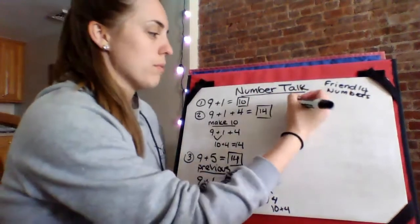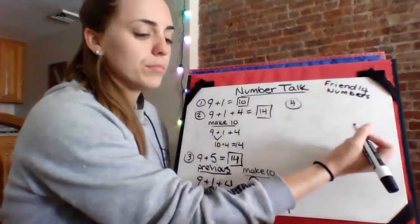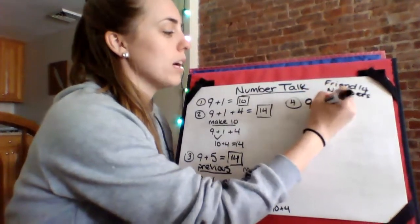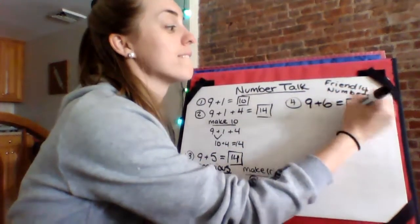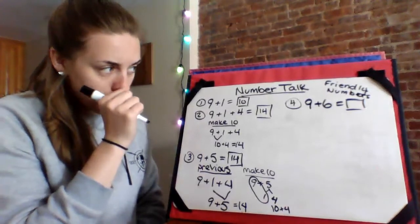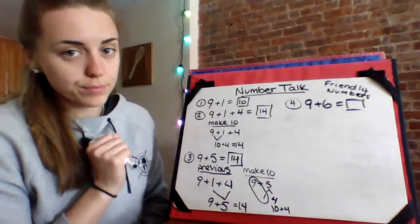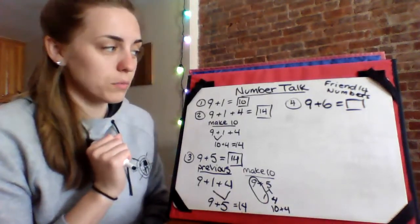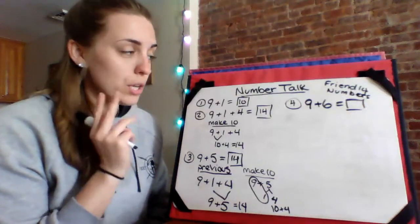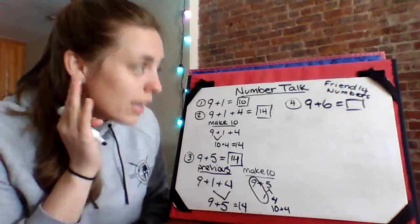Last one. Ready? Number four. Nine plus six. Nine plus six. All right. Whisper, shout your answer in three, two, one. Fifteen.